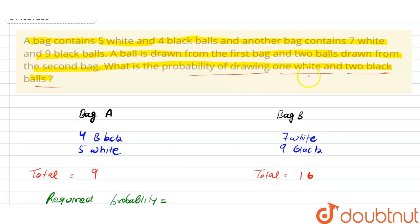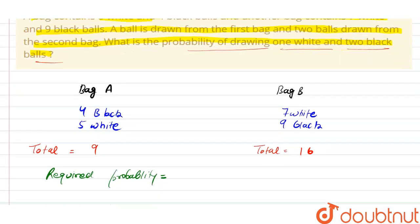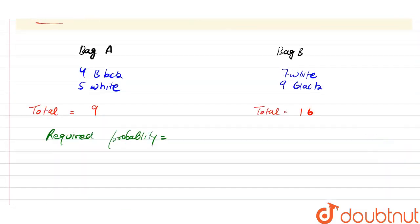For that, we have 2 cases. First case, we have to select 1 white and 2 black balls from bag A. In second case, we have to select 1 white ball and 2 black balls from the second bag. Then we add the sum of both probabilities to get our required probability.